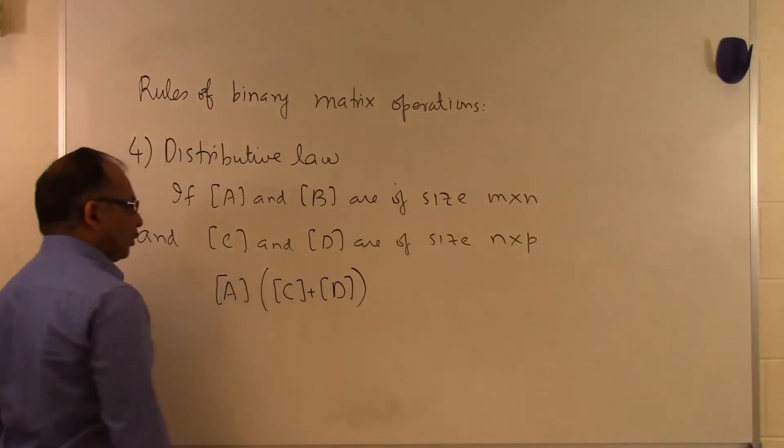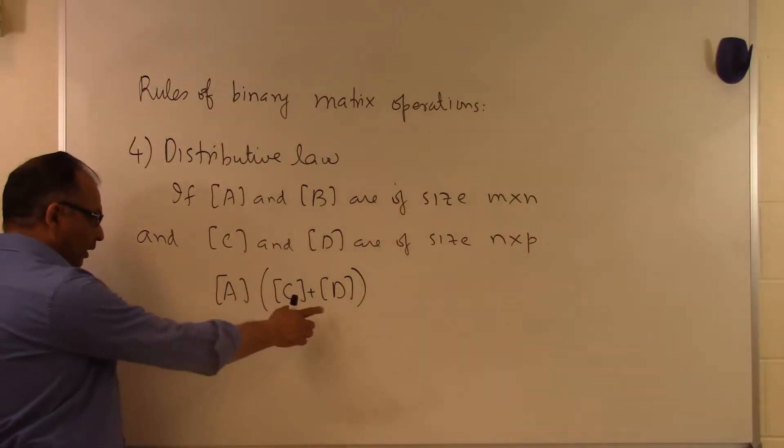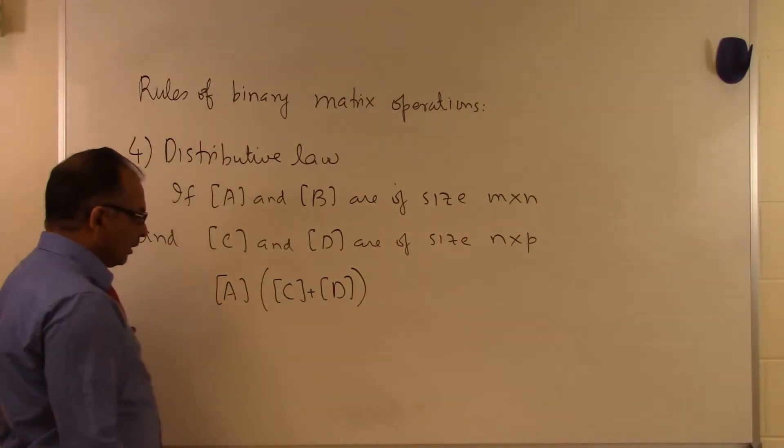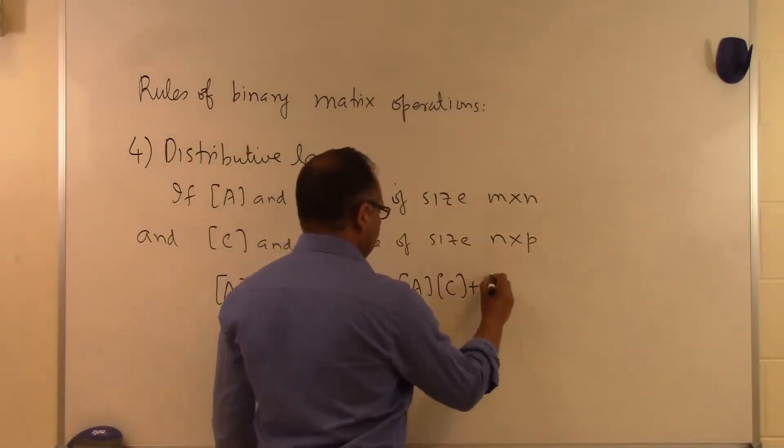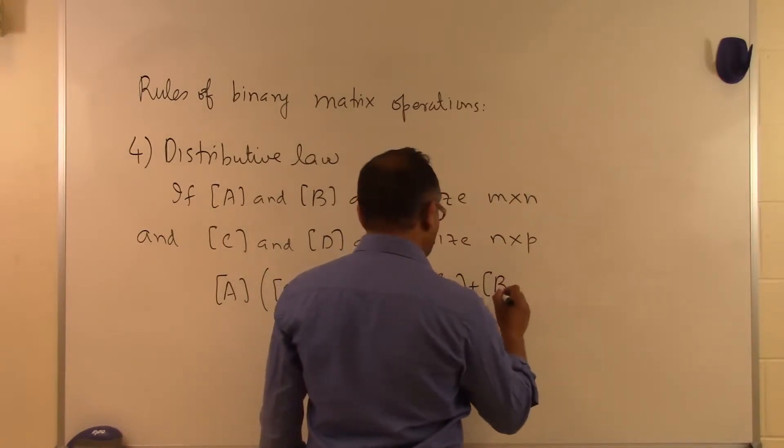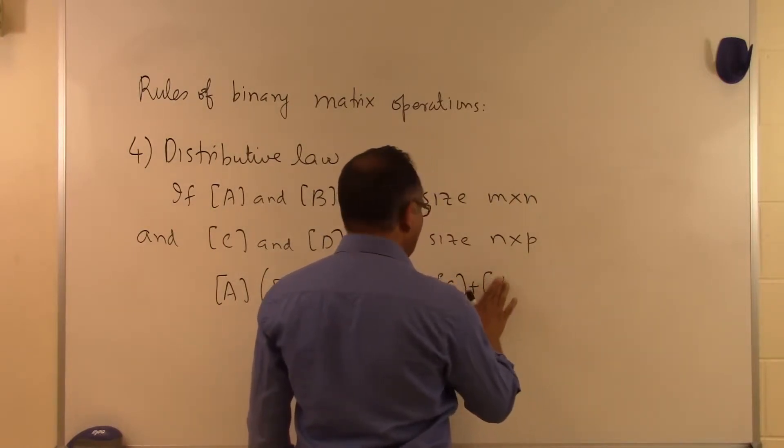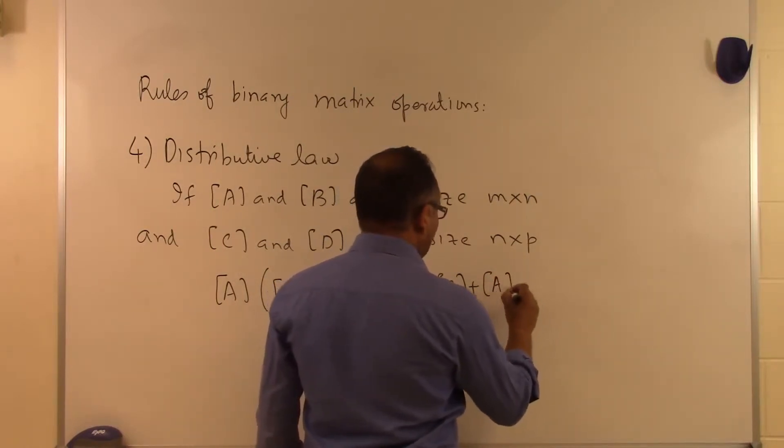I can take the matrix A and then I can multiply it to the addition of C and D. So first I do the addition of C and D, then I multiply the resulting matrix to A. That will be same as taking A, multiplying by C, taking A and multiplying it by D.